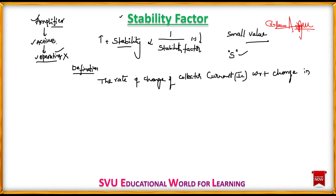When the operating point shifts out of the active region, the collector current changes. Beta is different for every transistor. The collector current Ic is equal to beta multiplied by Ib, where beta is the current amplification factor.